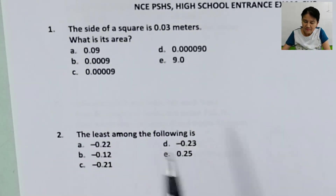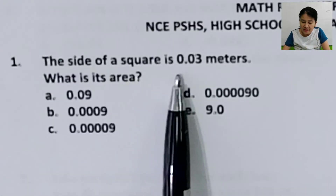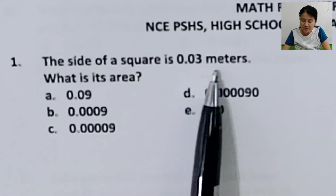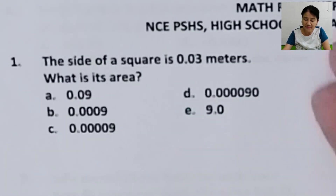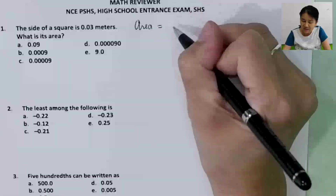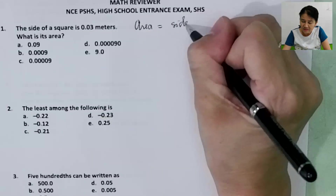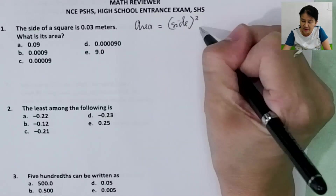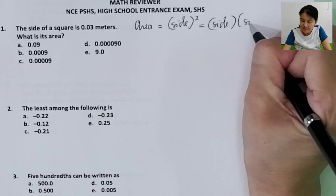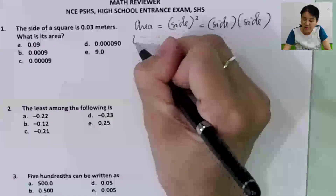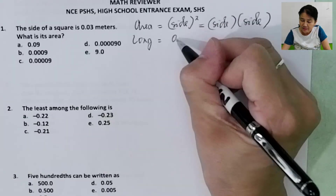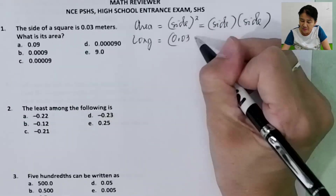Problem number one. The side of a square is 0.03 meters. What is its area? The area of a square is side times side, or simply side squared. The long way here is to multiply 0.03 two times.